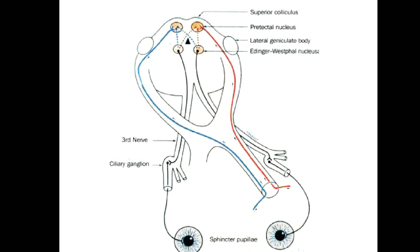From the Edinger-Westphal nucleus, the impulse then goes to the ciliary ganglion via the oculomotor nerve. From the ciliary ganglion there is a relay of fibers, and the post-ganglionic motor fibers leave the ciliary ganglion, pass via the short ciliary nerves, and innervate the sphincter pupillary muscle, resulting in constriction of the pupil.